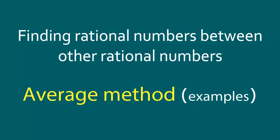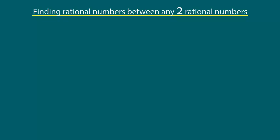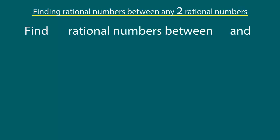Finding rational numbers between other rational numbers using the average method. Let's take a look at some examples. We are going to be given two rational numbers, and we have to find a whole bunch of rational numbers in between those two given rational numbers.